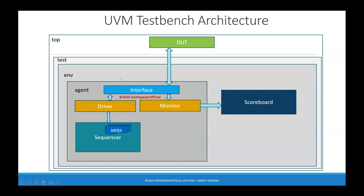As we said in the previous lecture, the UVM test bench is a layered architecture — and if you observe, we have built layers of UVM components here. It is also object-oriented: each component in UVM is extended from a base class provided by UVM itself. Top is extended from UVM top, test from UVM test, ENV from UVM ENV, agent from UVM agent, driver from UVM driver, monitor from UVM monitor, and sequencer from UVM sequencer. This is an object-oriented test bench.